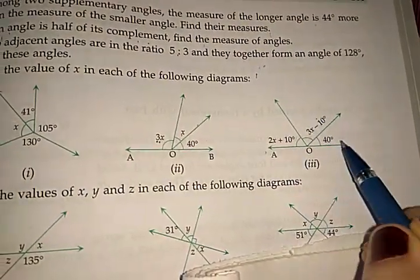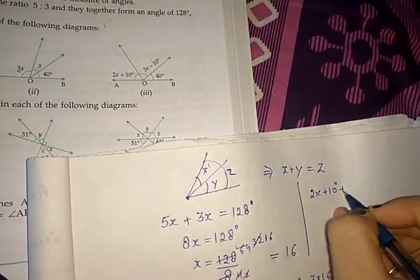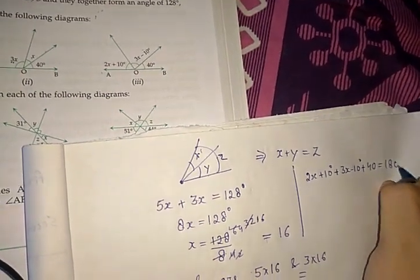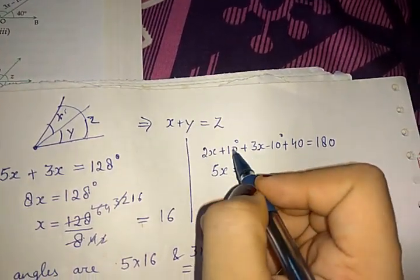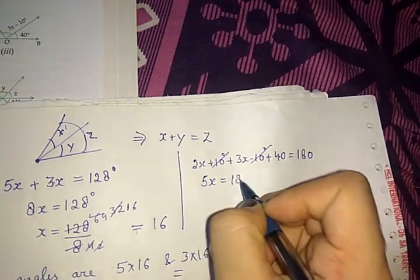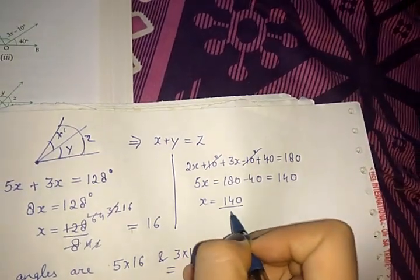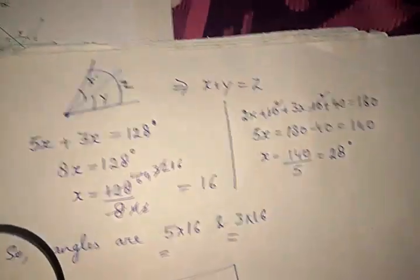Similarly, for another case where all angles sum to 180 degrees on a straight line: (2x plus 10) plus (3x minus 10) plus 40 equals 180 degrees. Solving: 5x — the plus 10 and minus 10 cancel out — so 5x plus 40 equals 180, giving x equals 140 divided by 5, which is 28 degrees.